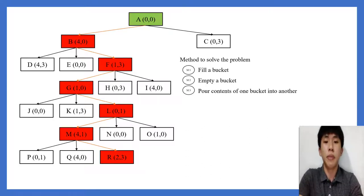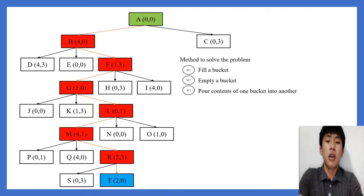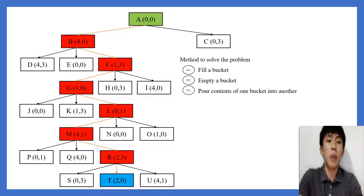Next we focus on (2,3). Using Method 2 to empty x gives (0,3). Then using Method 2 again to empty y gives the final goal state: (2,0). We also show using Method 3 to pour, giving (0,1). This is the first mapping procedure shown from initial step A to T, and the table shows the 7 steps taken to reach the goal state.